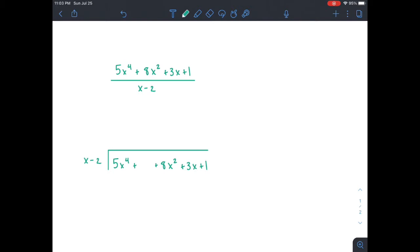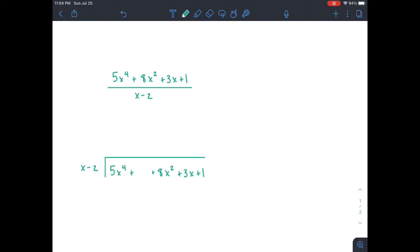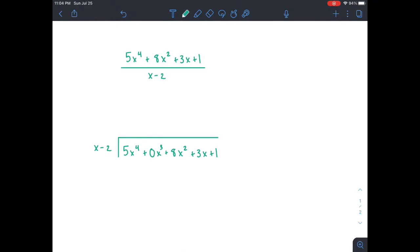We're going to do the same thing, but notice here that it goes from 5x to the 4th to 8x squared. There's no x cubed term. But regardless, it's important that we write that in when we're doing polynomial division. So the coefficient would just be 0, and we'd write 0x cubed. Alright, now we can continue on.